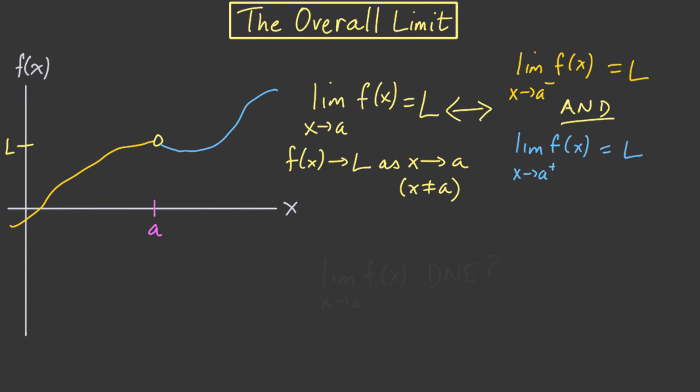Now the overall limit might not exist. One way it might fail to exist is if the limit from one side does not exist. So for instance, as we come in from the left, f(x) might blow up to minus infinity or something. But another way is if the limit from the left and the limit from the right both exist, but they're not equal. Something like this. They have to both exist and be equal in order to get an overall limit.